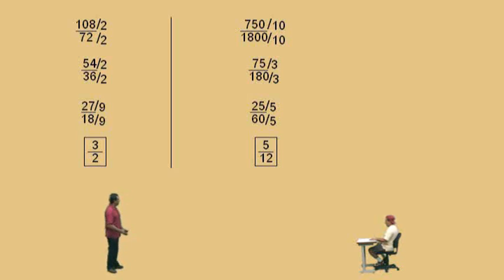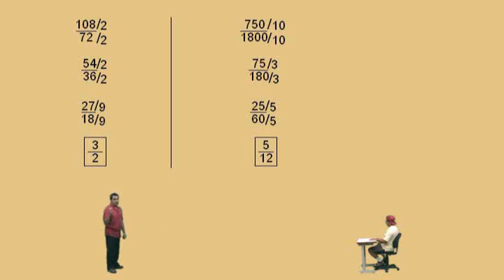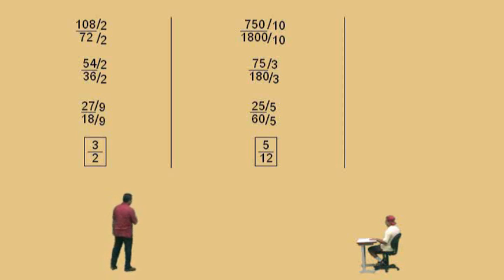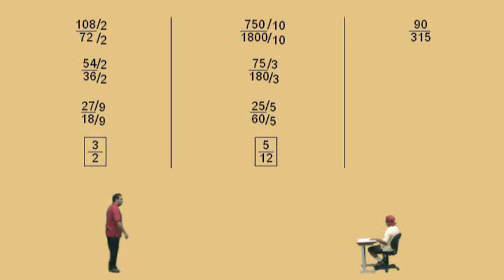Professor Perez: Again, there's different ways of approaching these answers. Notice we divided by 10, then by a 3, then by a 5. So this problem could have been done in one step by dividing top and bottom by 150, because 10 times 3 times 5 is 150. But let's take some practice — work in steps. Try it on your own, try the problem different ways. Let's do one more problem, Charlie, just to make sure we have it.